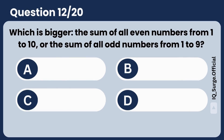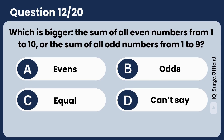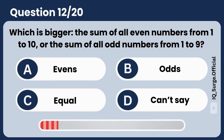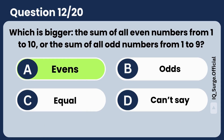Which is bigger: the sum of all even numbers from 1 to 10, or the sum of all odd numbers from 1 to 9? Answer: the evens are bigger.